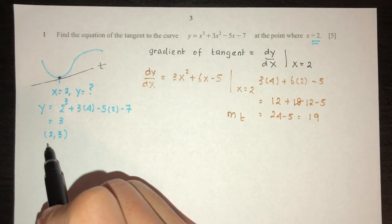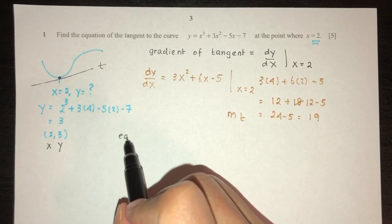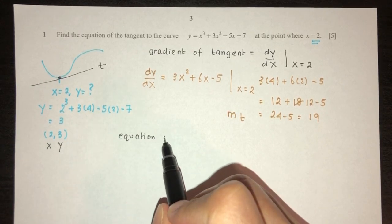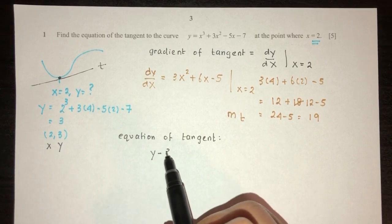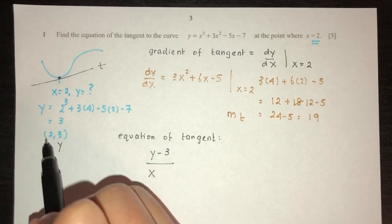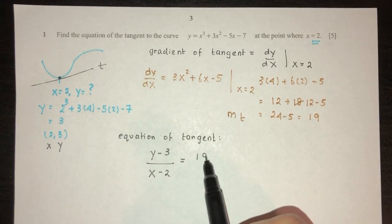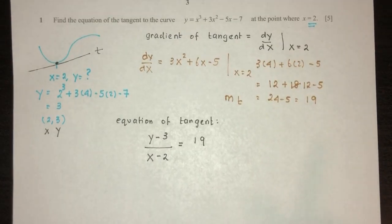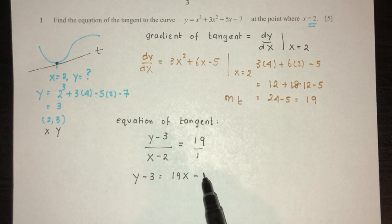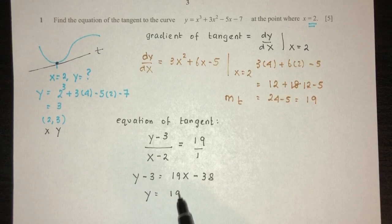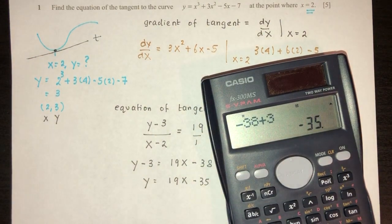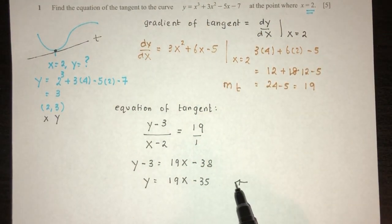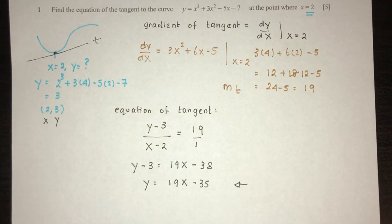Using the point (2, 3) and gradient 19, the equation of the tangent is (y − 3)/(x − 2) = 19. Cross-multiplying: y − 3 = 19x − 38, so y = 19x − 35. You can check: −38 + 3 = −35. This is the equation of the tangent, and that is your question number one.